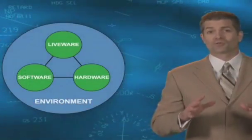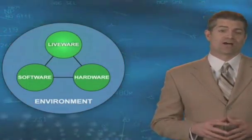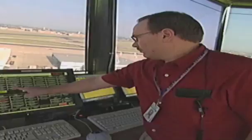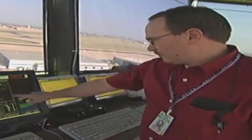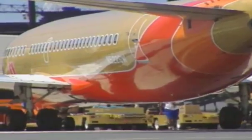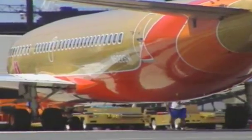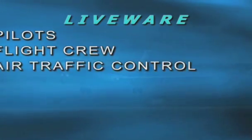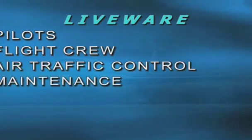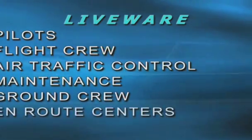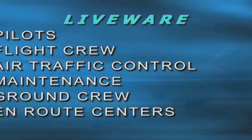The last and fourth component of the Shell Model is L, pertaining to liveware. Liveware represents the different individuals at work in an aviation environment — the pilots, flight crew, air traffic control, maintenance personnel, ground crew, and people working in the en-route centers.